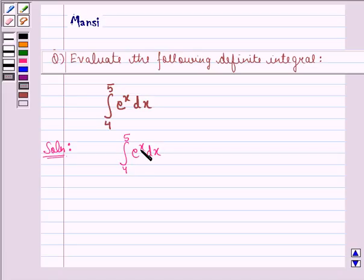Now we see that the integral of e raised to power x dx is equal to e raised to power x. Here the lower limit of integration is 4 and upper limit is 5.